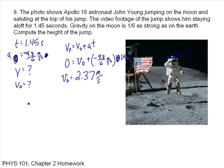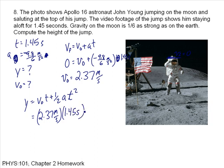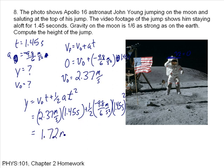Then to find the height: Y equals V-naught T plus one-half A T squared, which equals 2.37 meters per second times 1.45 seconds plus one-half times (minus 9.8 over 6) times 1.45 seconds squared. He jumped 1.72 meters — almost six feet. That's actually a pretty impressive jump.